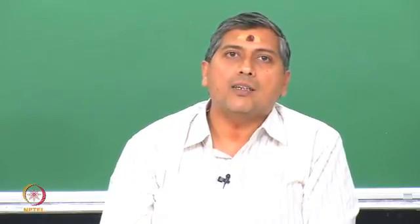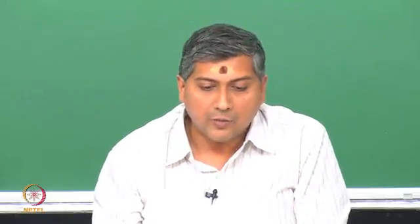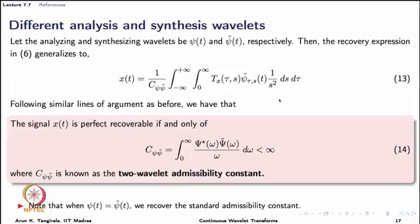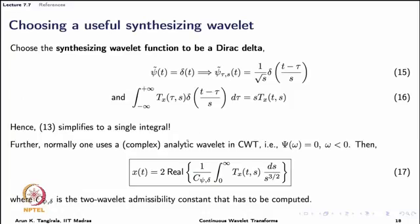Because we generally use a complex analytic wavelet for CWT, we can rewrite the expression further. Plugging the simplification into the synthesis equation yields a single integral: (1/C_{ψ,δ})·∫₀^∞ T_x(τ,s)·s^(−3/2) ds. When using a complex analytic wavelet, you take the real part of the wavelet transform, giving the final expression. A quick 3-line derivation of this is available in Mallat's book.